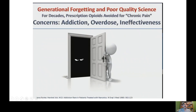What caused this? There was generational forgetting and poor quality science. For decades prescription opioids were avoided for treating chronic pain and only prescribed in the most severe cases — like dying of cancer or a serious injury requiring morphine. Then in the 1990s, doctors began prescribing them to treat things like arthritis, knee pain, and joint pain, and people started becoming addicted.